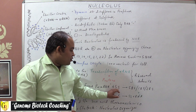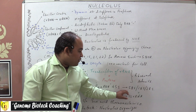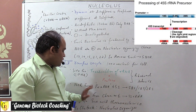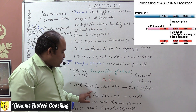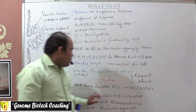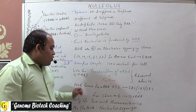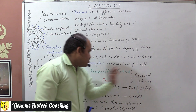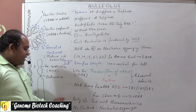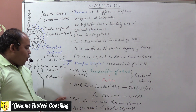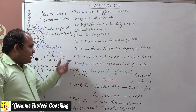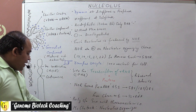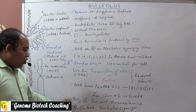The nuclear organizing region forms a pre-rRNA referred to as 45S, which leads to the formation of 5.8S, 18S, and 28S rRNA. These, in association with 5S rRNA from chromosome number 1 and proteins, lead to the formation of ribosomal subunits and the complete ribosome.